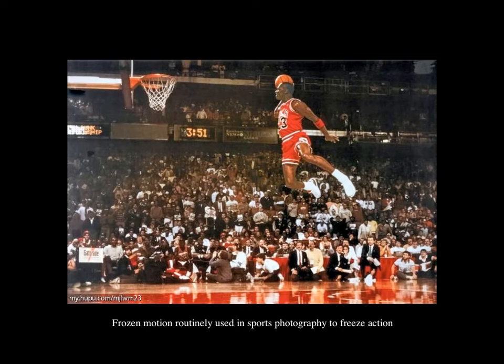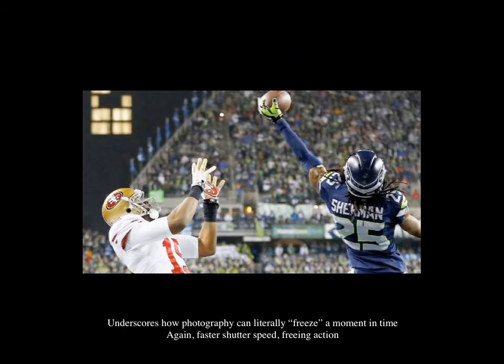A really great example of frozen motion is sports photography. The majority of sports photographs focus on freezing action. This is a famous image of Michael Jordan at the slam dunk contest where he dunked from the free throw line. The photographer had a fast enough shutter speed where nothing's blurry — he is crisp, the ball is crisp, the rim, the crowd, everything's in focus. It looks like he's just floating in midair and you get the sense of how high he is and how far he's jumped. Frozen motion is routinely used in sports photos. Here's a more recent example from the NFC championship game — photography can literally freeze a moment in time that you remember, but see frozen through photographs.